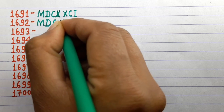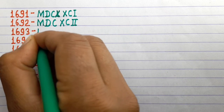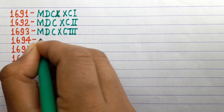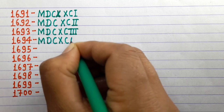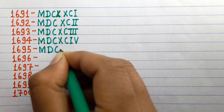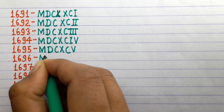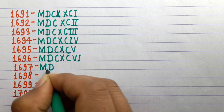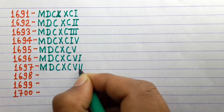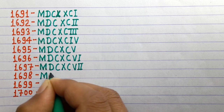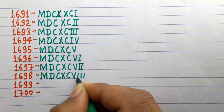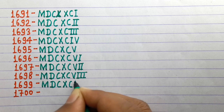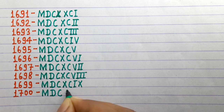1692 MDCXCII, 1693 MDCXCIII, 1694 MDCXCIV, 1695 MDCXCV, 1696 MDCXCVI, 1697 MDCXCVII, 1698 MDCXCVIII, 1699 MDCXCIX, 1700 MDCC.